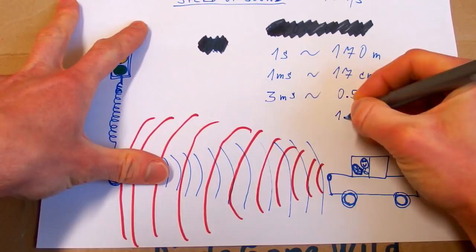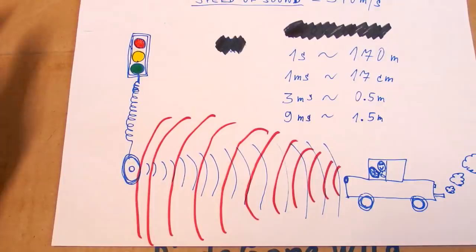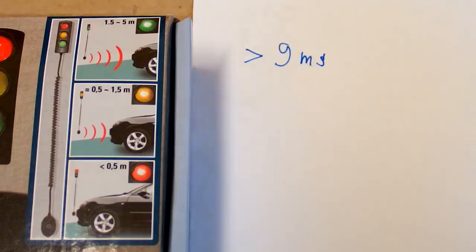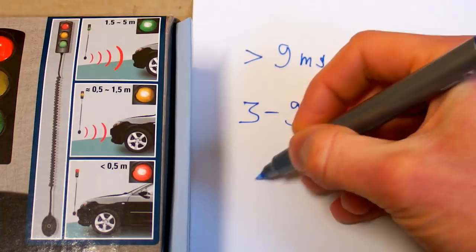Or one millisecond is going to be about 17 centimeters. So half a meter is about 3 milliseconds. And 1.5 meters is about 9 milliseconds. So it shows green if the delay is over 9 milliseconds. It shows yellow if it's 3 to 9 milliseconds. And it shows red if it's under 3 milliseconds.